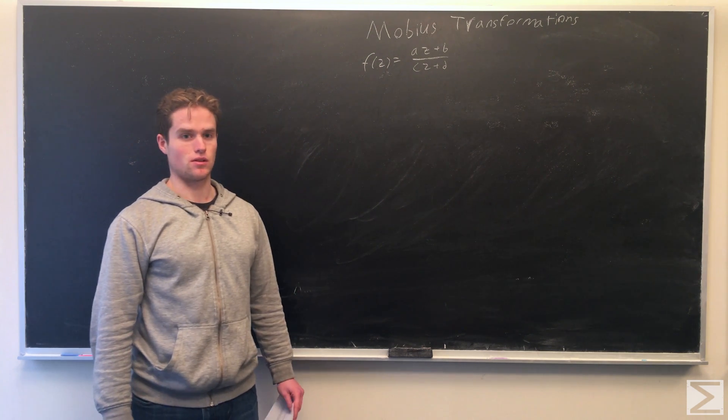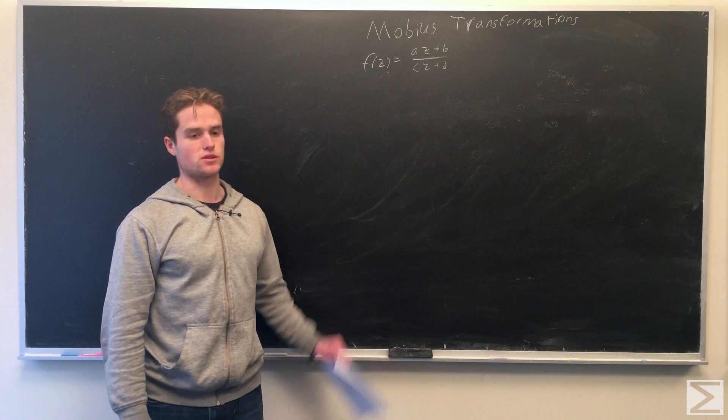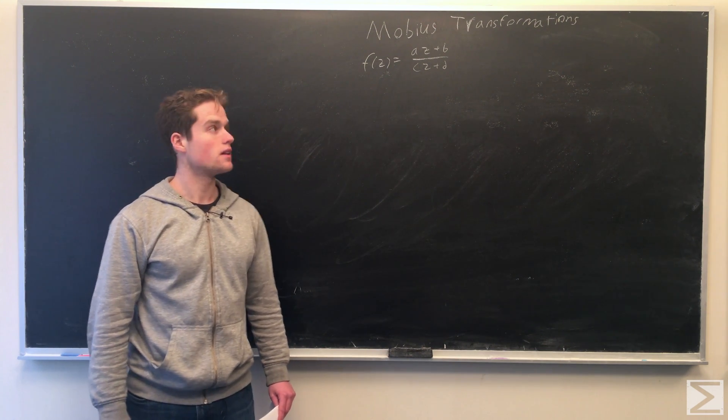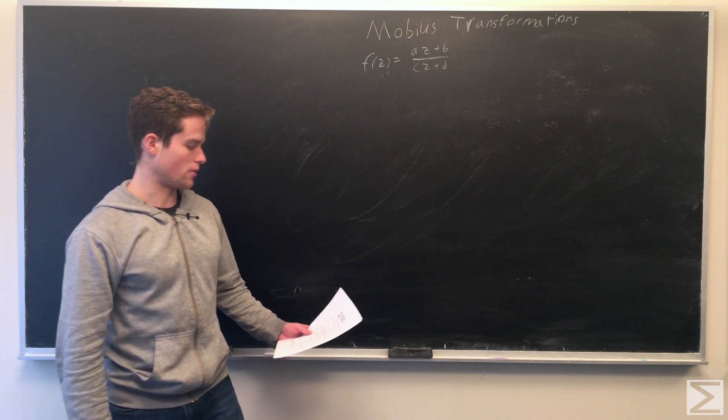So Mobius transformations are of the form f of z equals az plus b over cz plus d. First, let's note that we want...